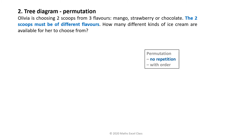Let's look at an example. Olivia is choosing two scoops from three flavours: mango, strawberry, or chocolate. The two scoops must be of different flavours. How many different kinds of ice cream are available for her to choose from?